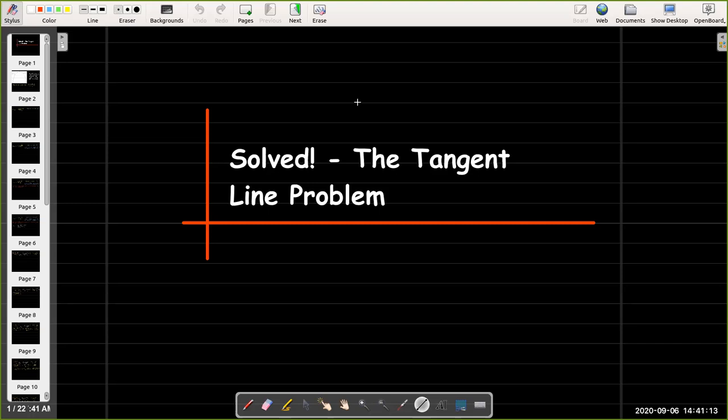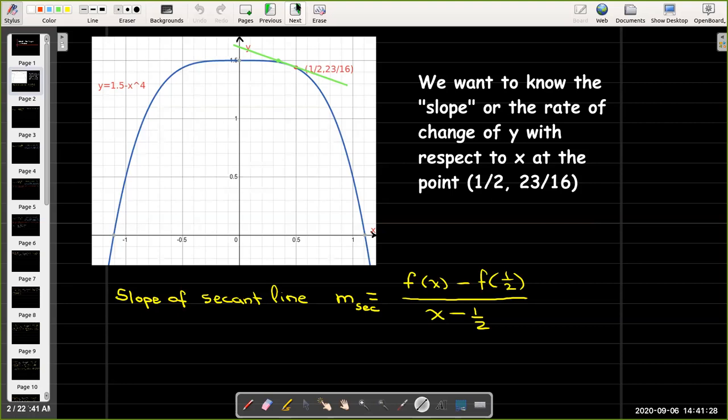We started our calculus course with a couple of problems. One was the tangent line problem, and now we have enough tools to solve it. The idea was we're given a curve which is not a straight line and we choose a point on the curve. We would like to know at what rate y is changing with respect to x at that point on the curve.